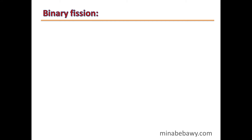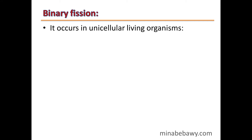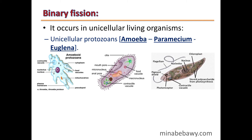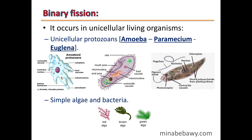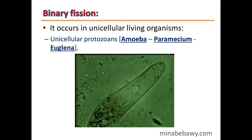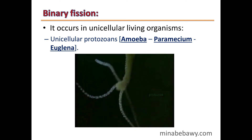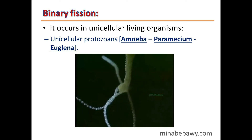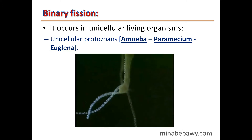We will start with binary fission. It occurs in unicellular living organisms such as unicellular protozoans — for example, amoeba, paramecium, and euglena. This video shows some unicellular protozoans under the microscope.